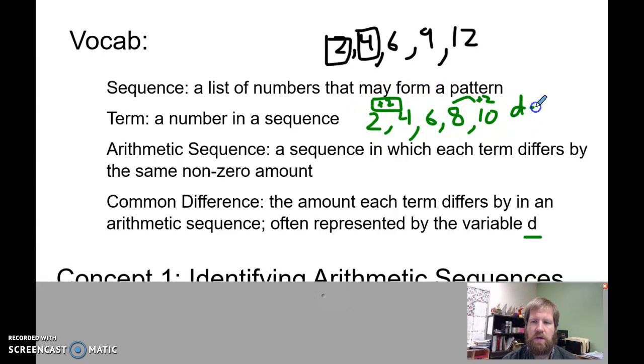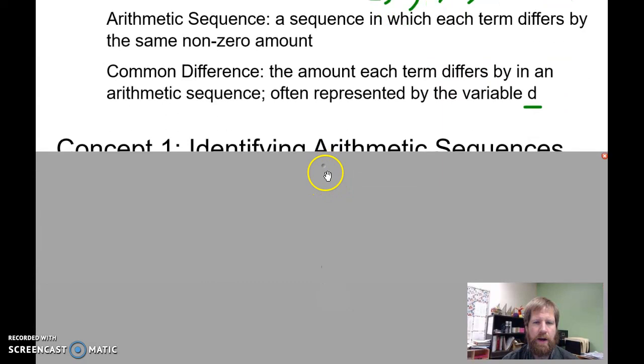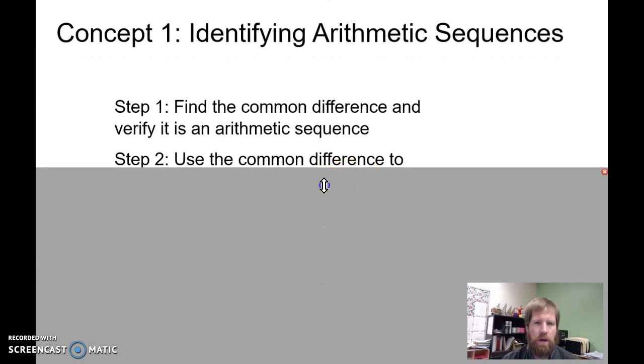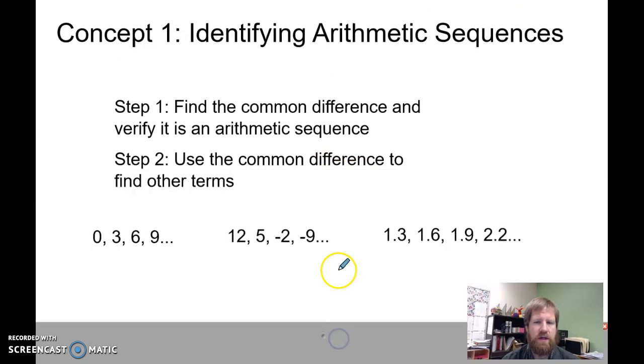Concept one: identifying arithmetic sequences. When you are identifying whether a sequence is an arithmetic sequence or not, you're going to find the common difference. So you go zero to three—that's an increase of three. Three to six—increase of three. Six to nine—it's an increase of three.